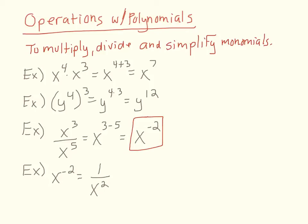So this would not be a final answer, because we have the negative exponent value, and we don't want negative exponent values. So if you have an exponent that's negative, you always find the reciprocal.